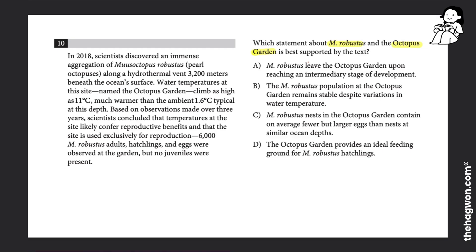While skimming through the passage, I notice that the first sentence mentions M. Robustus, but not the octopus garden. The second sentence talks about the octopus garden, but not M. Robustus.